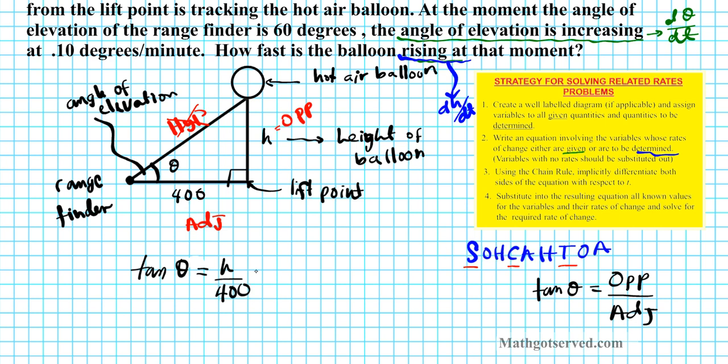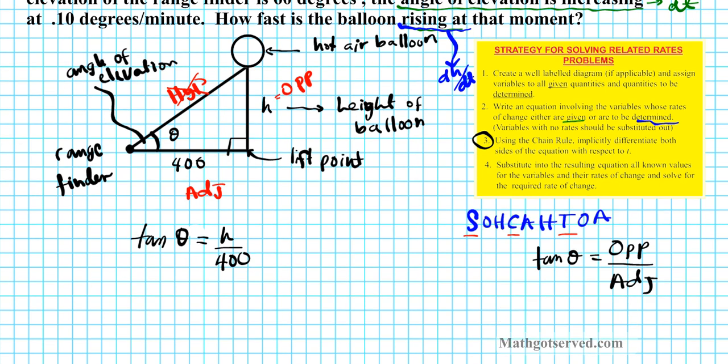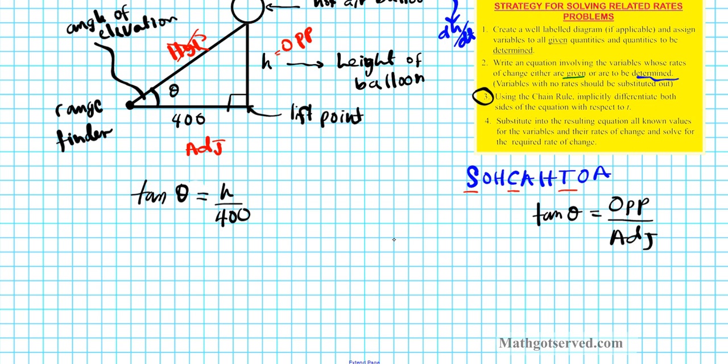Now, one mistake that most students make is they substitute before differentiating. So you want to be careful. Never substitute before you differentiate. You want to implicitly differentiate first as indicated in step three before you substitute and solve. All right? So let's differentiate implicitly first. So what do I mean by differentiating implicitly? We're going to differentiate the entire equation with respect to time. Okay?